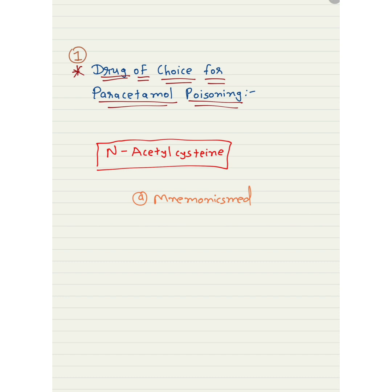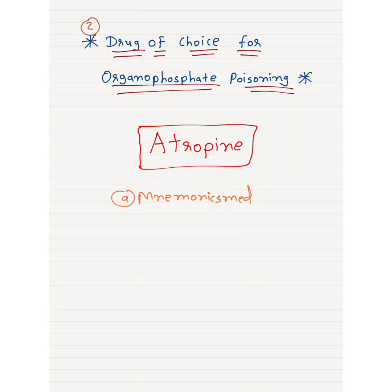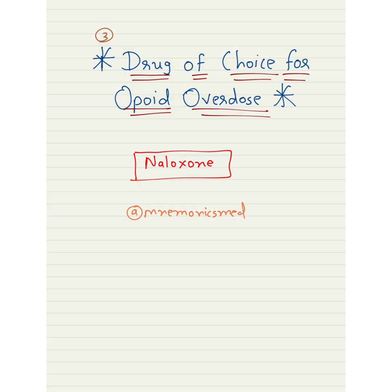The second poison is organophosphate poisoning. The drug of choice for organophosphate poisoning is atropine. Remember atropine for organophosphate poisoning.